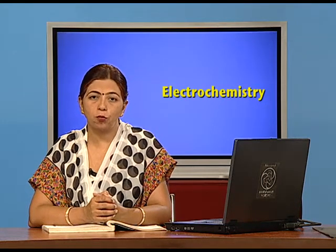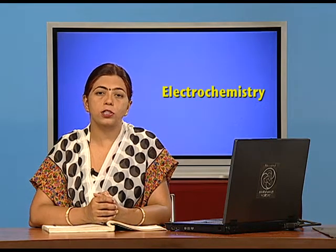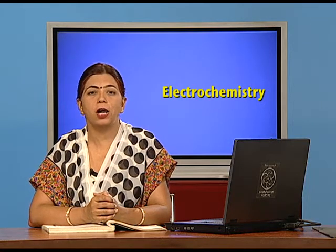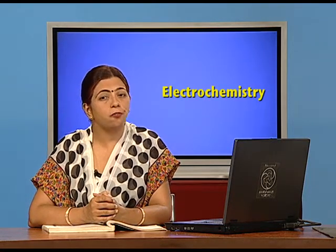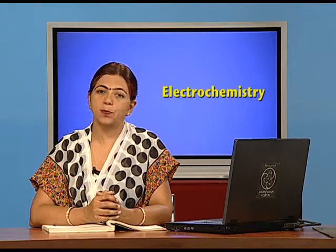The iron loses electrons and is oxidized to the ferrous state. These electrons move through the article and reduce oxygen at another point, in the presence of hydrogen ions. Atmospheric carbon dioxide, in the presence of moisture, forms carbonic acid (H2CO3), which provides hydrogen ions. Oxygen accepts electrons in the presence of hydrogen ions, gets reduced, and forms water — all of this takes place at the cathode.